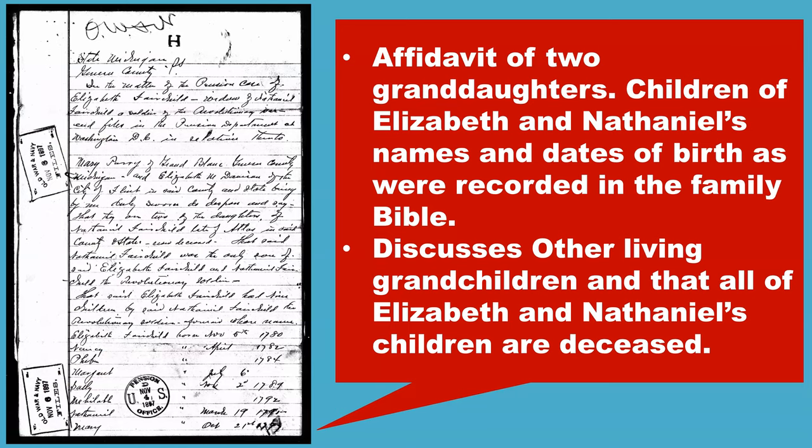This is an example from a widow's pension. The soldier's name is Nathaniel Fairchild and his wife's name was Elizabeth. They lived in Williamsville and Lancaster, New York. This incredible file offers an affidavit of two of the Fairchild's granddaughters. The Fairchild's children are named and their dates of birth recorded. It also mentions other living grandchildren and that all of their children were deceased when the pension was applied for.